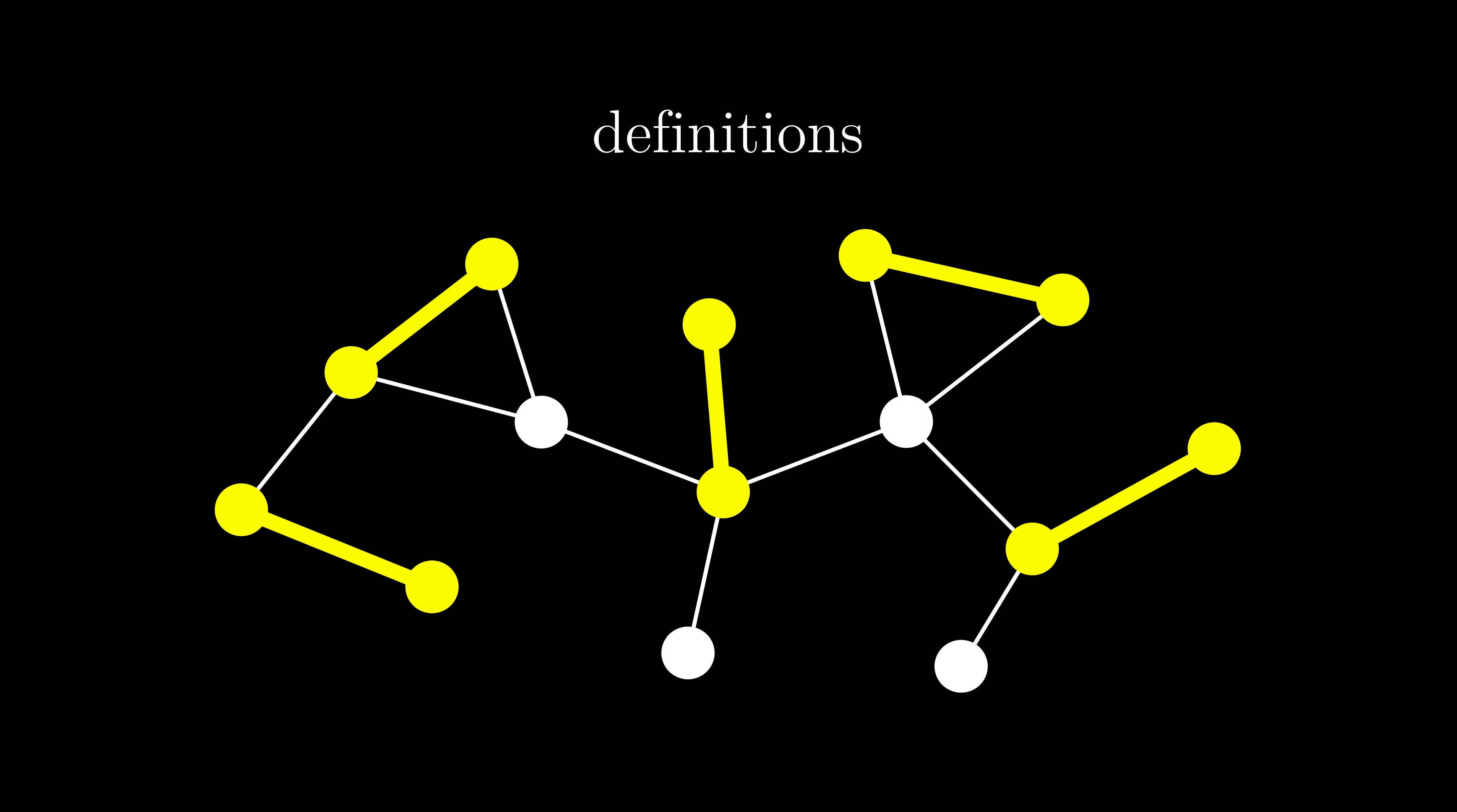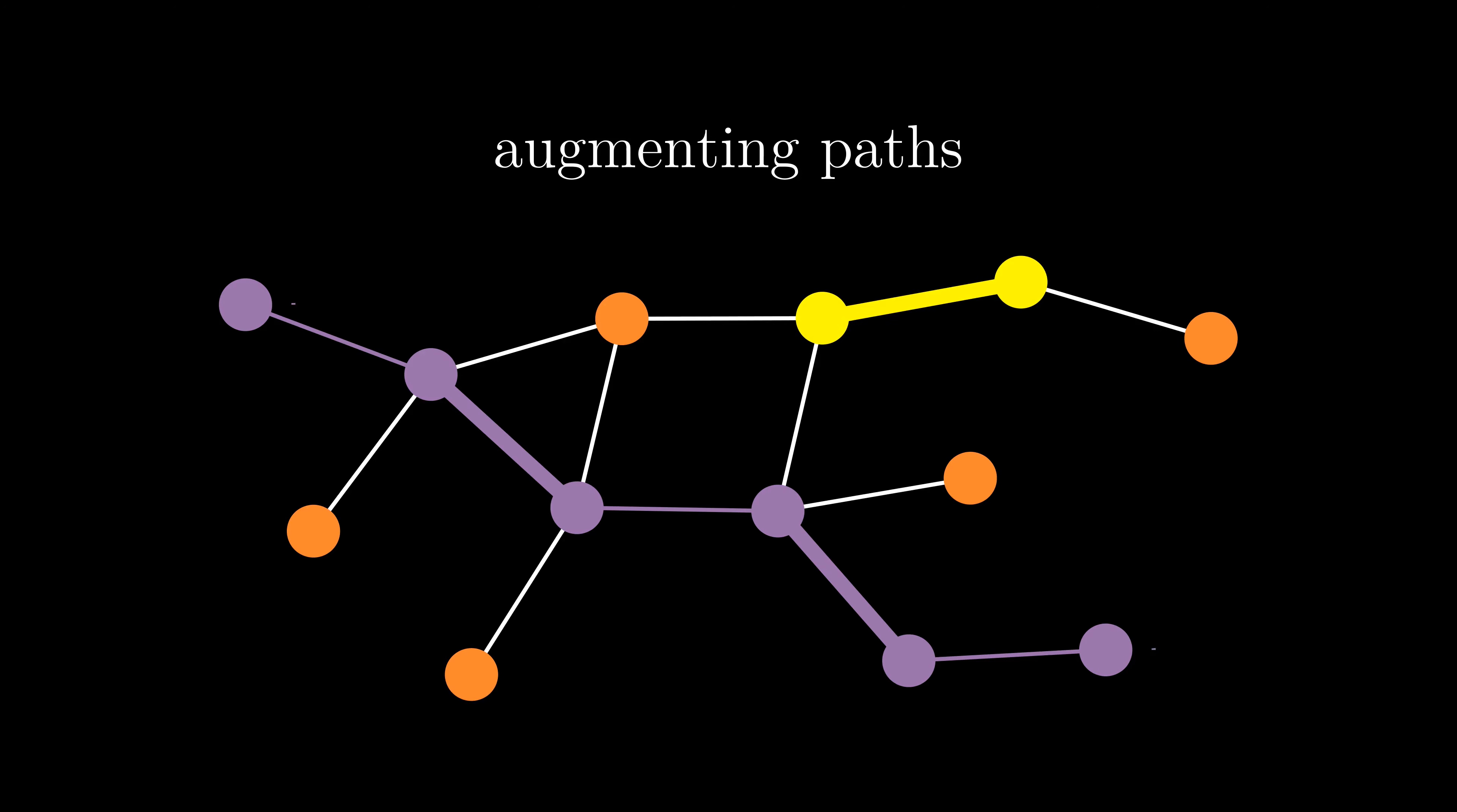The core idea behind the algorithm are augmenting paths. An augmenting path in a graph is an alternating sequence of matched and unmatched edges, where the first and the last vertex is exposed. As the name suggests, augmenting paths can improve, or augment, the size of the current matching by switching the matched and unmatched edges. As you can see, the matching is still valid, but its size increased by 1.